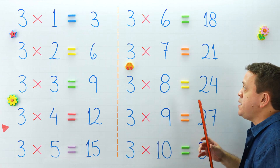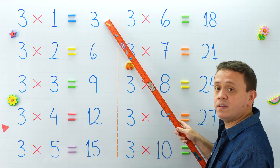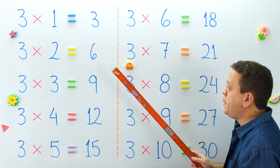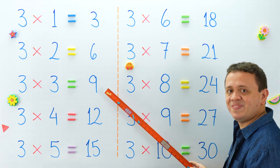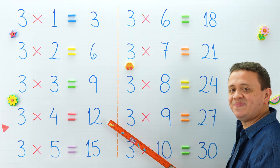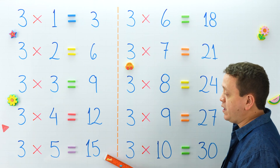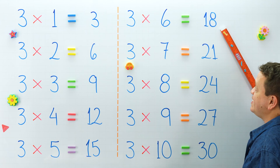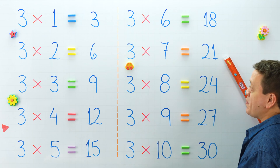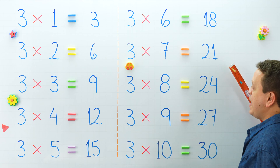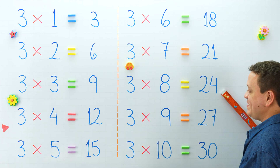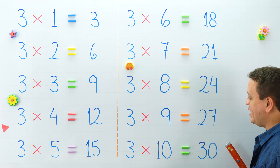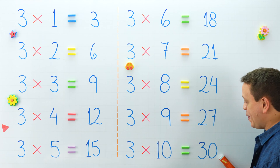Why don't we take another look at the products of this table? But this time you're going to help me. What is 3 times 1? And 3 times 2 equals? 3 times 3 equals? And 3 times 4 is equal to? 3 times 5 equals? And 3 times 6 equals? 3 times 7 equals? And 3 times 8 equals? One more — 3 times 9 equals? Last one, 3 times 10 is equal to 30. That is right.